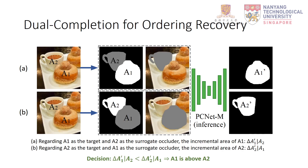Given a trained PCNet-M, we show how to recover the ordering between two neighboring objects. For example, in this image, we denote the doughnut as A1 and the coffee cup as A2. When we regard A1 as the target object and A2 as the surrogate occluder, PCNet-M keeps the mask of A1 unchanged. Conversely, when we make A2 the target and A1 the occluder, PCNet-M increases the area of A2. Since the incremental area of A2 is larger than that of A1, we conclude that A1 is above A2. This simple strategy achieves surprisingly high accuracy, recovering pairwise ordering between all neighboring objects as a directed graph.